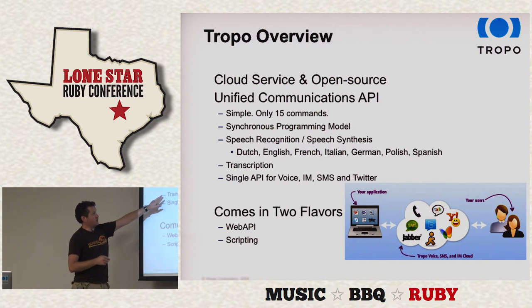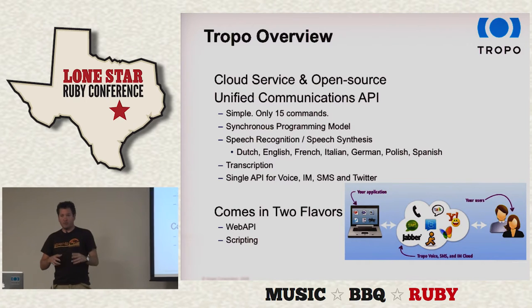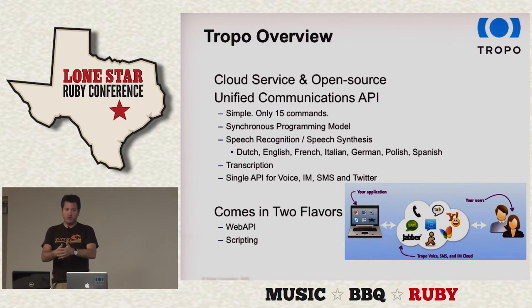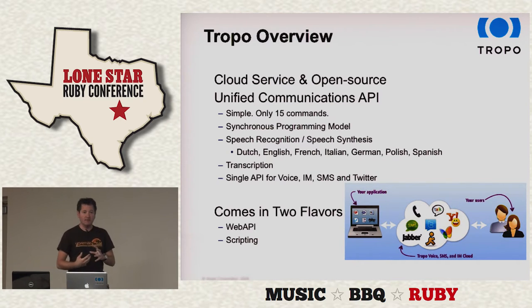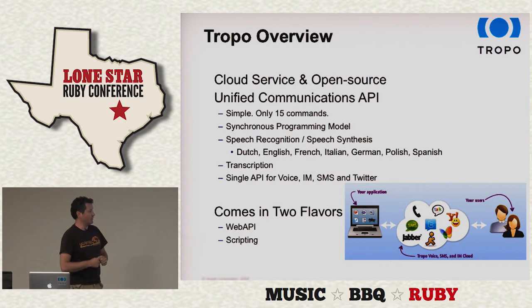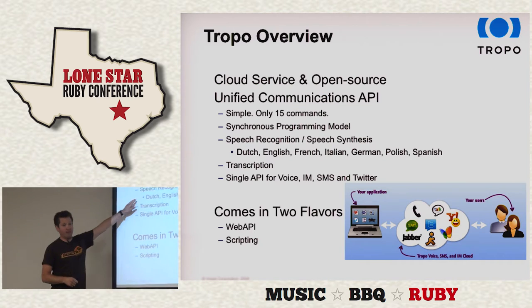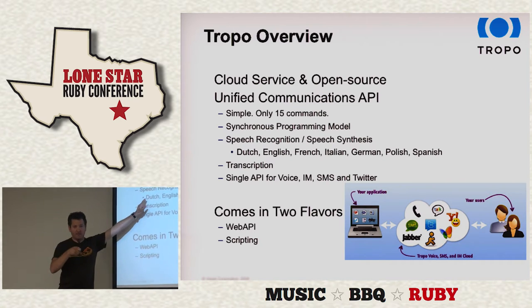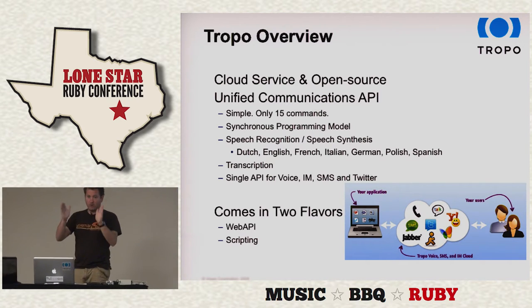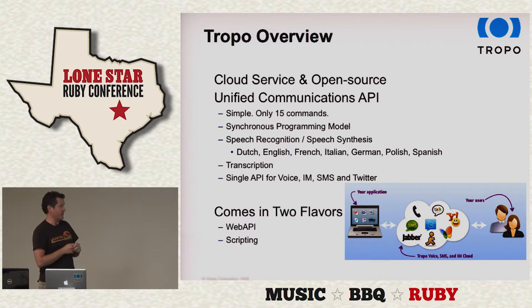There's speech recognition driven by grammars and then there's also transcription. You can take a voicemail, feed it into the transcription engine, and get back an email with the text. That's more freeform — it tends not to be as accurate, like Google Voice. It's very different when you're doing real-time guided speech recognition, because you're giving it a fixed grammar or a fixed set of words to recognize. And as I mentioned, it's a single API.